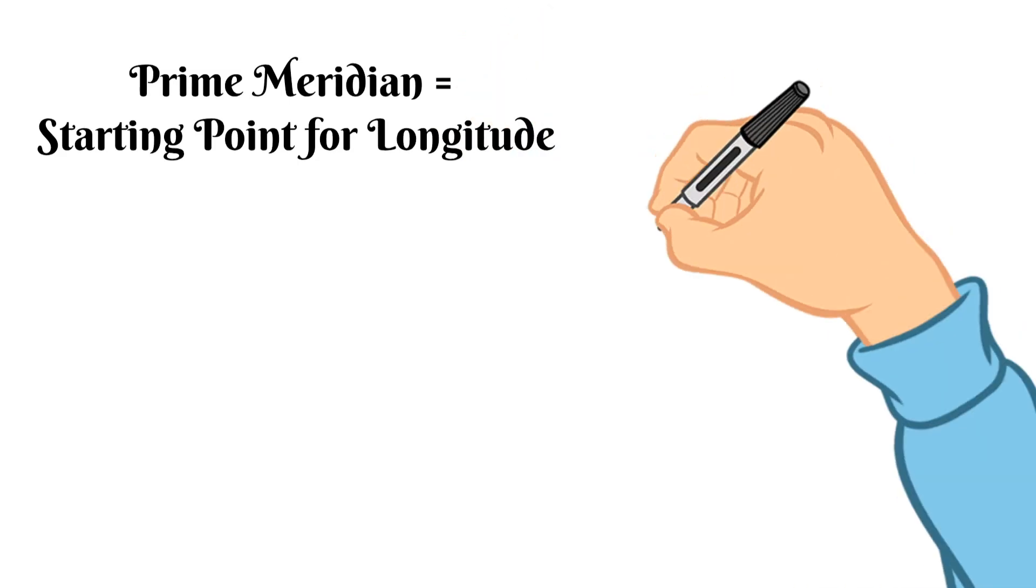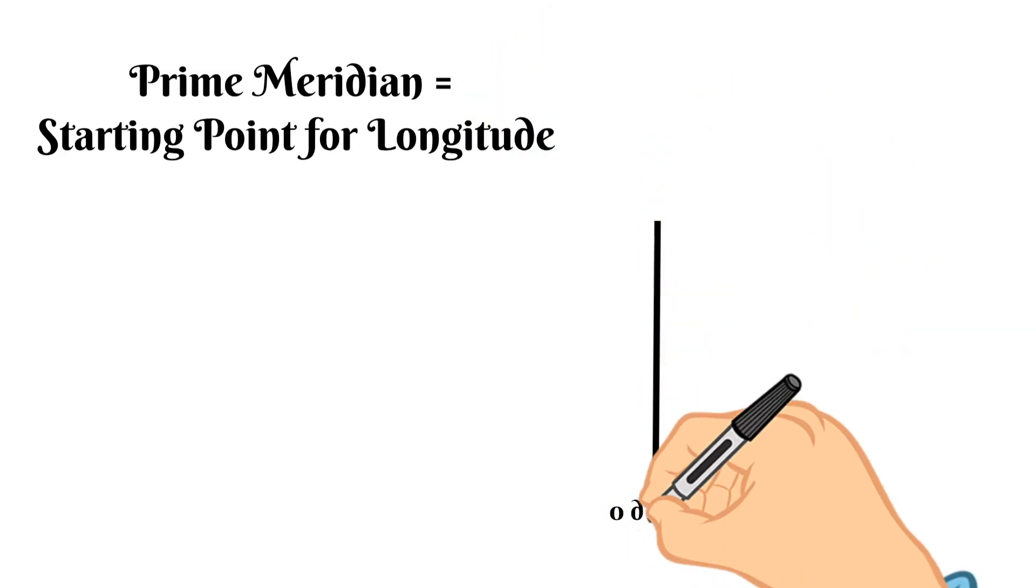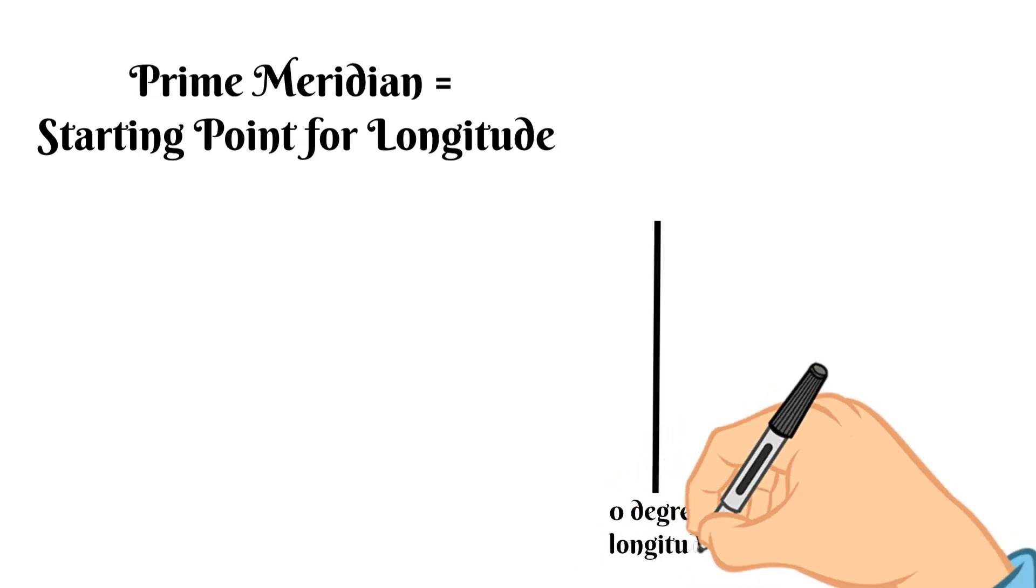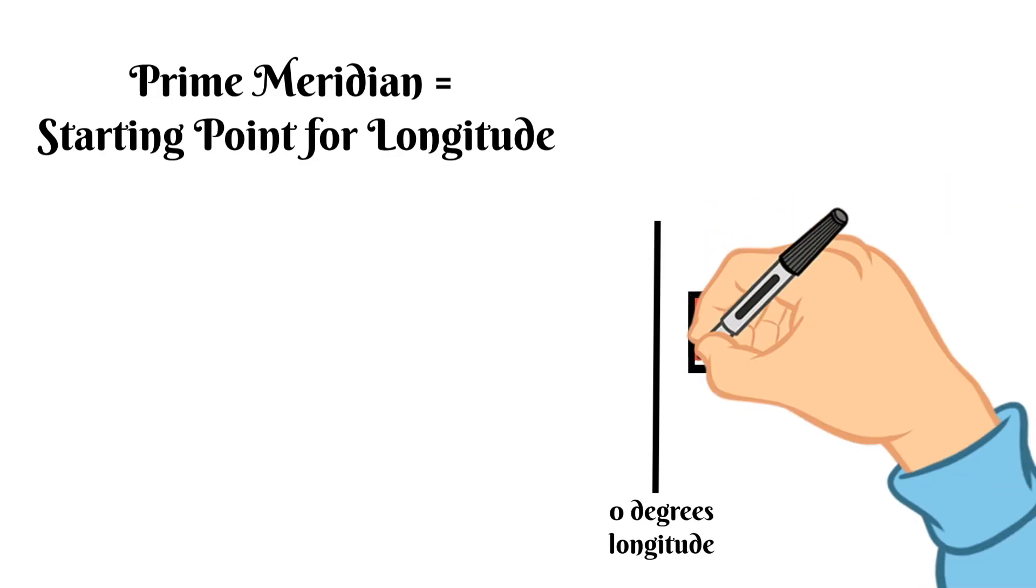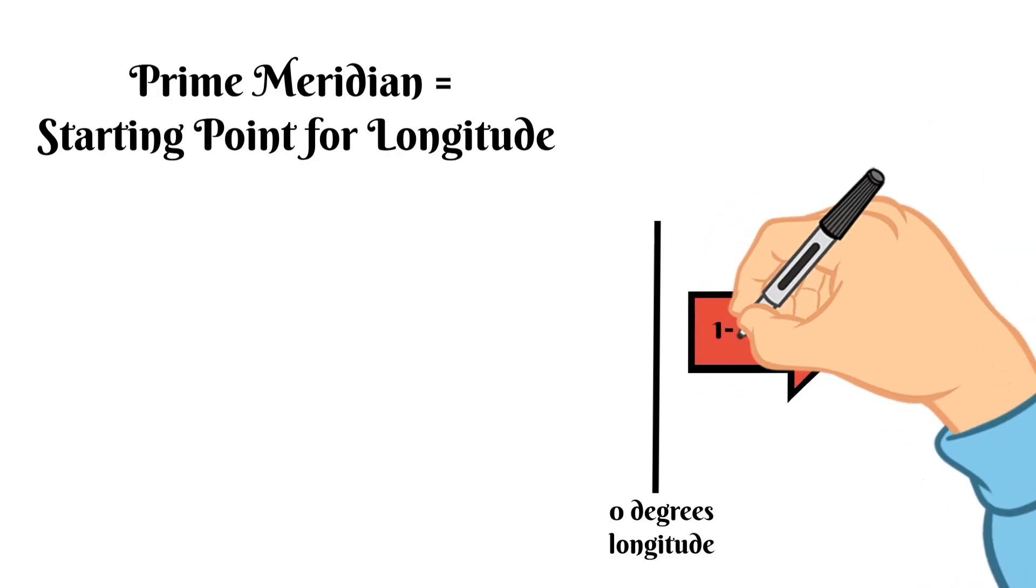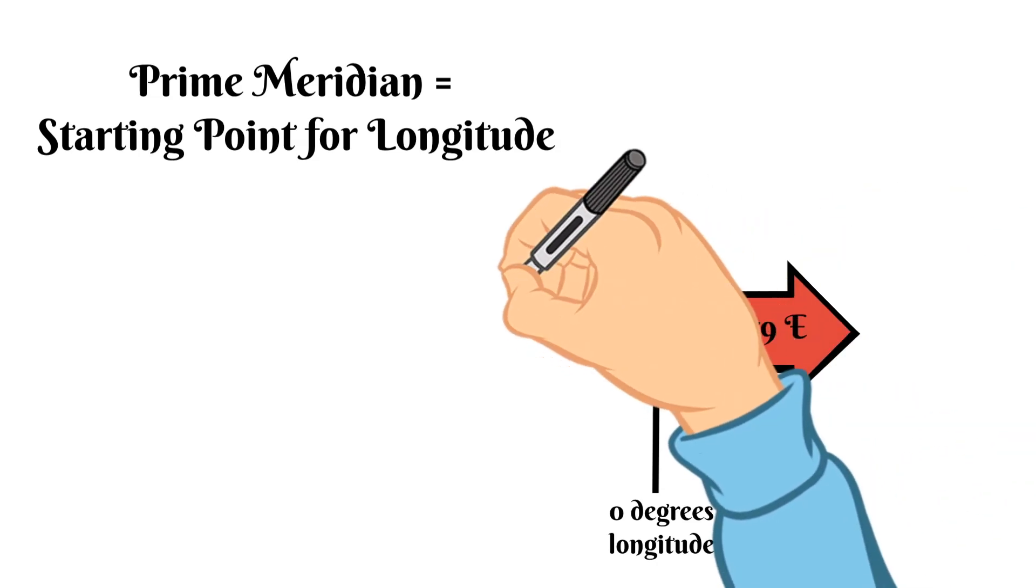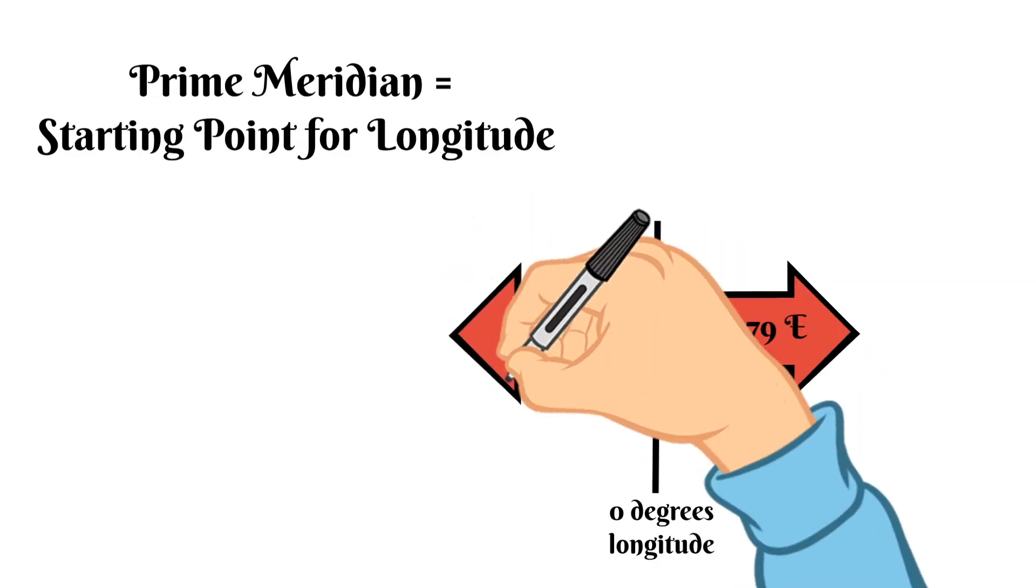So the prime meridian is at zero degrees longitude. The lines of longitude east of the prime meridian are numbered from 1 to 179 degrees east and lines of longitude west of the prime meridian are numbered from 1 to 179 degrees west.